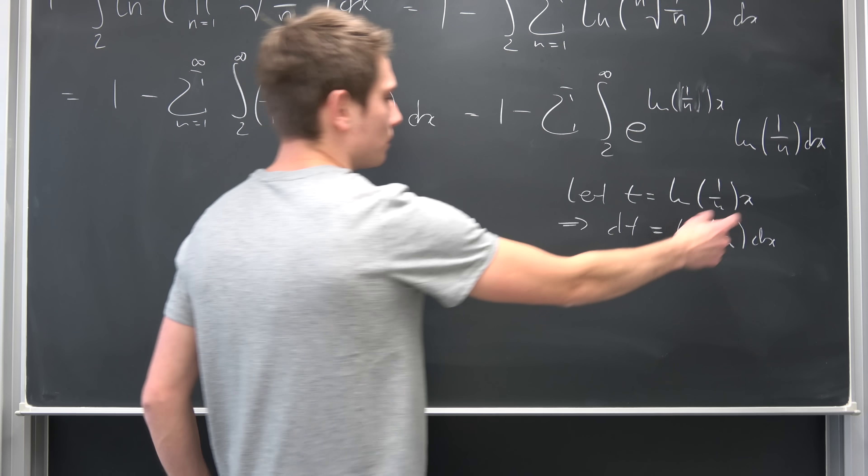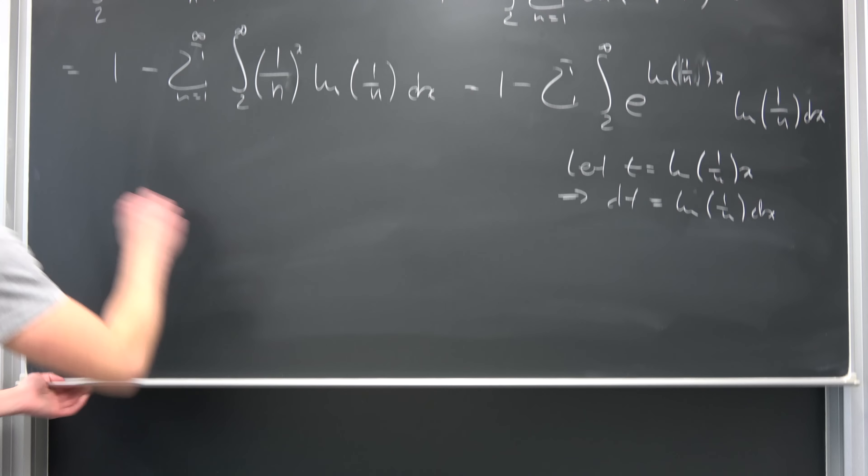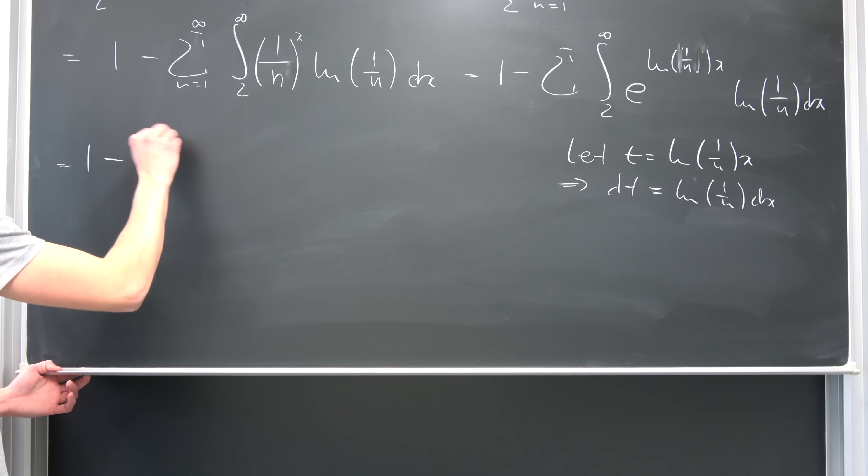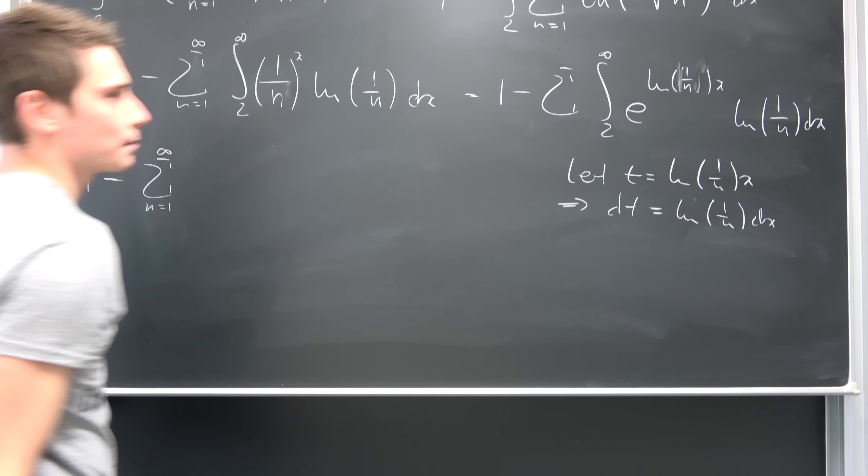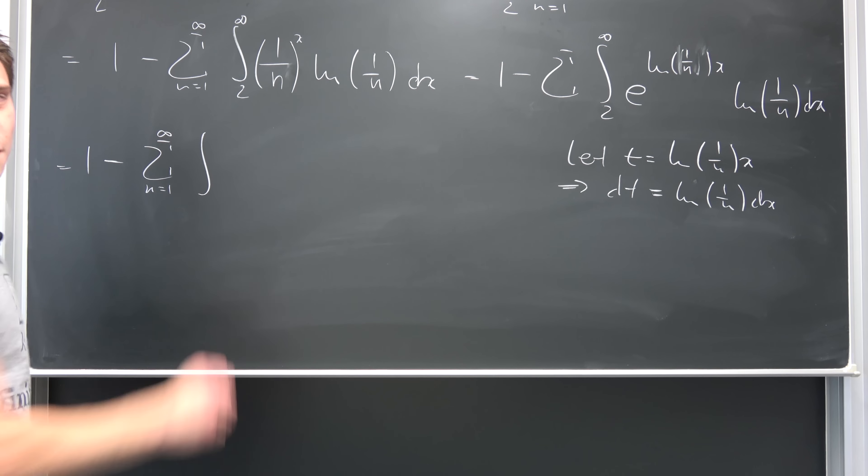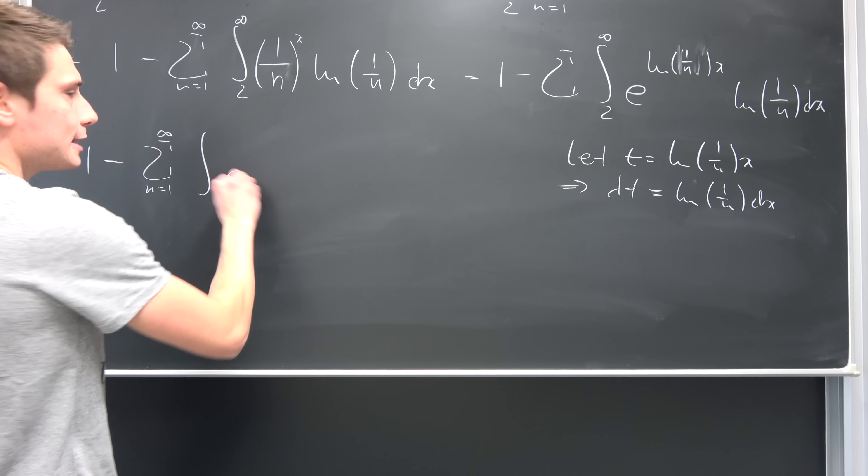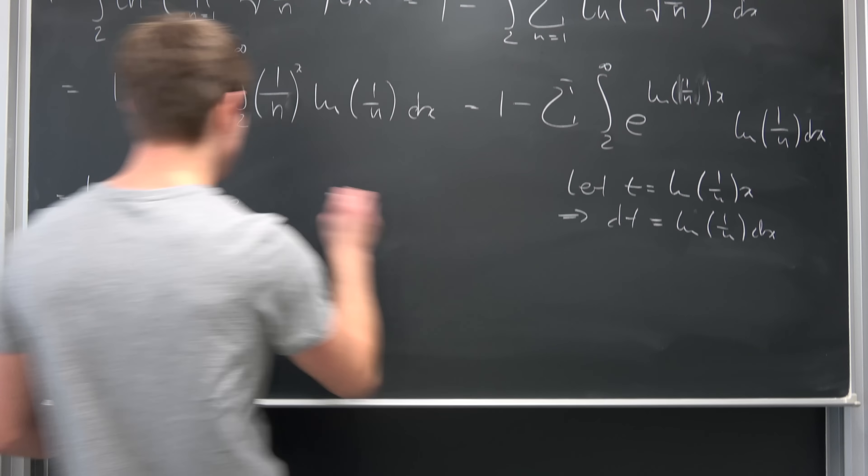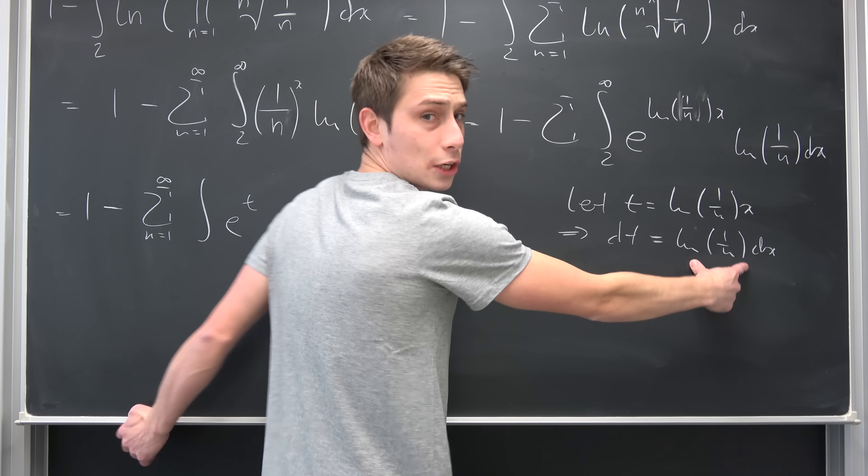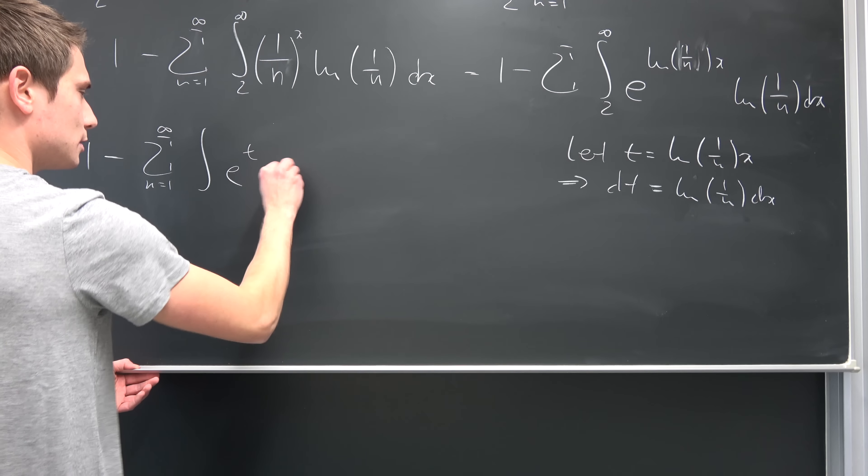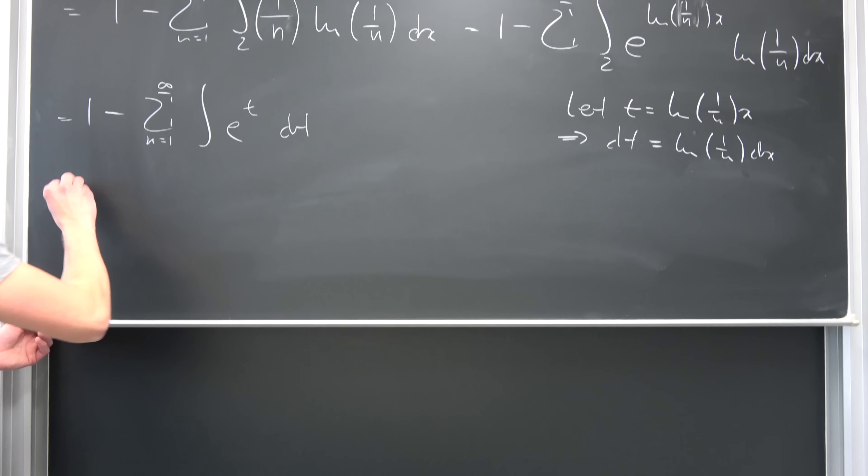I really don't care about the upper and lower bounds at the moment. Let's just plug those new values in. So this is nothing but 1 minus the infinite summation from 1 to infinity of... Okay, now we have some upper and lower bounds, I really don't care. E to the... Okay, this is e to the t now. And well, this chunk right here is nothing but dt. So that worked out quite nicely.